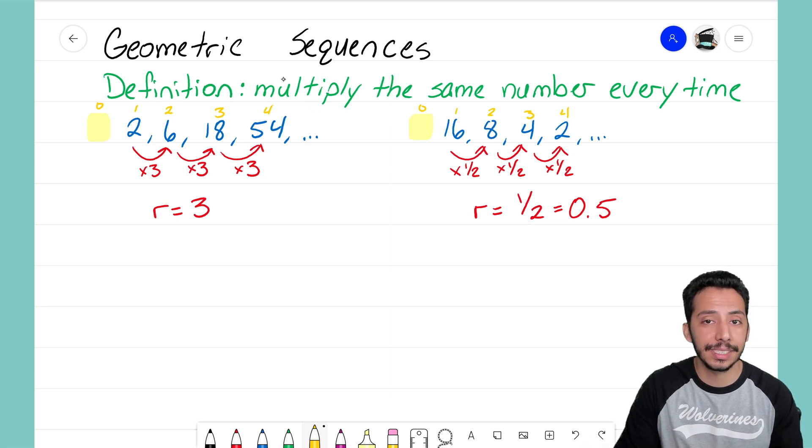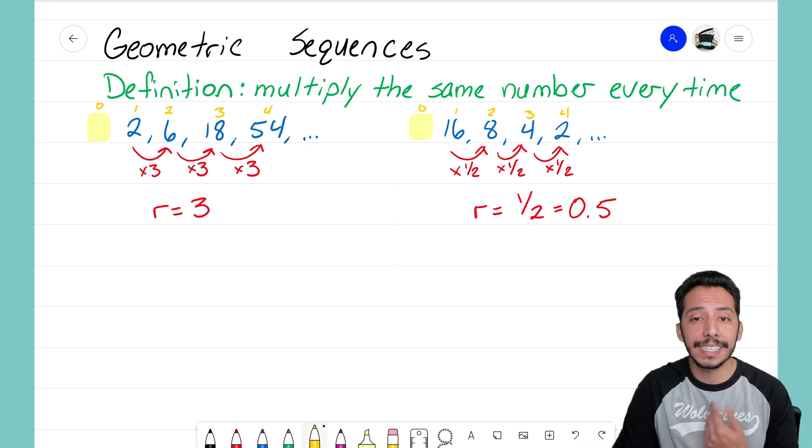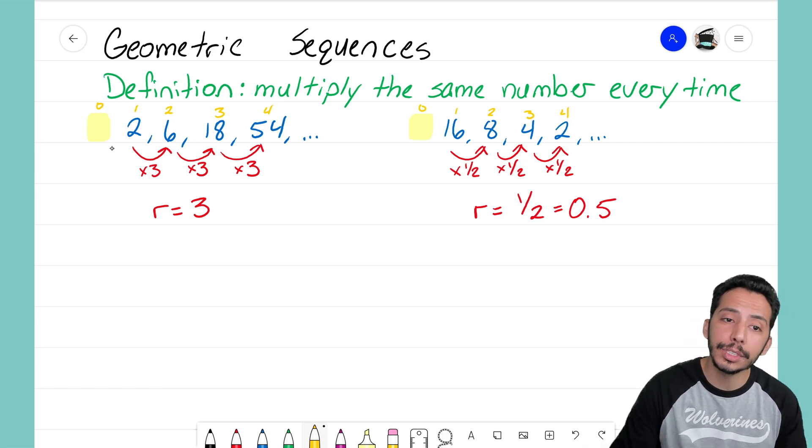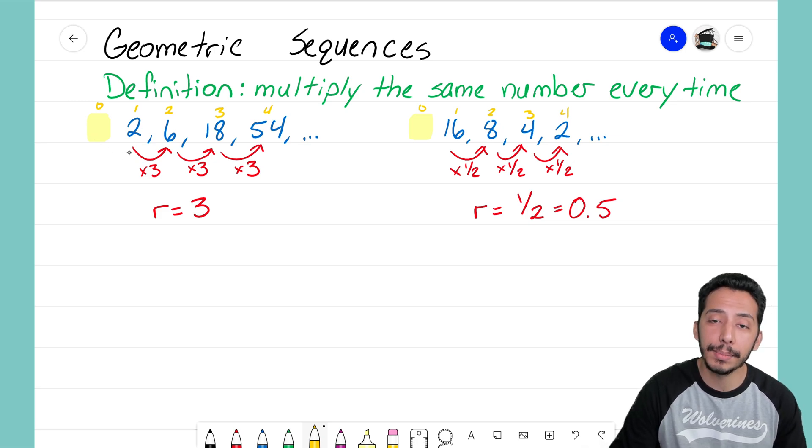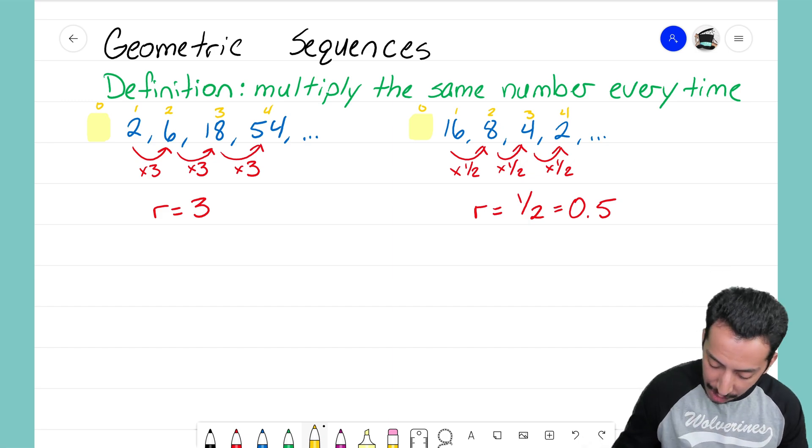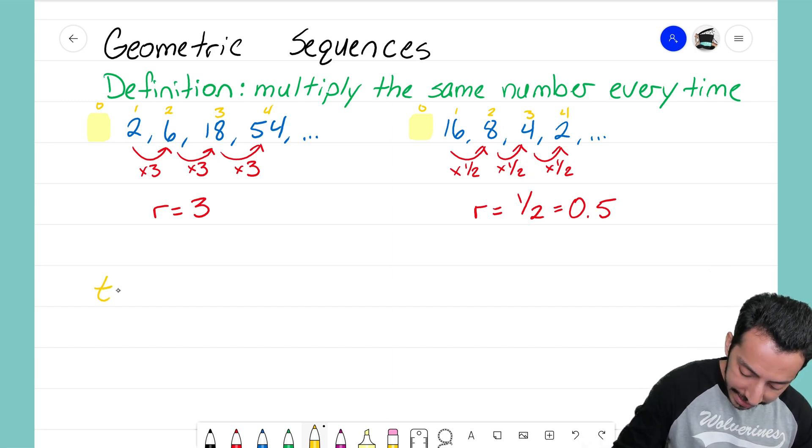For geometric sequences we're still going to look at our first term and we're going to divide by our common ratio. Very similar - we're doing the opposite operation that's happening in that sequence. Since we're multiplying to get the same number every time, if I want to move backwards in that sequence, instead of multiplying by the common ratio I have to divide.